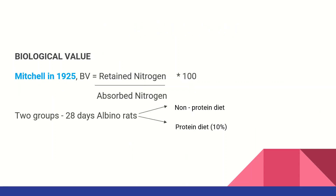That leads us to Biological Value. Mitchell (1925) defined biological value as: retained nitrogen divided by absorbed nitrogen, into 100. Retained nitrogen refers to whatever amino acids we have — we decide to reduce the amount of amino acids and the body can convert them.